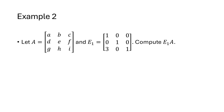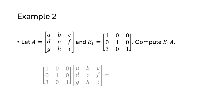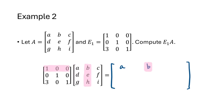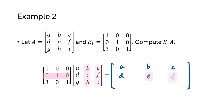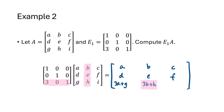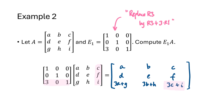Let's illustrate why multiplying an elementary matrix by a general n by n matrix gives the result of applying that row operation to that matrix. We have a generic matrix A with letters for the nine entries, and our elementary matrix E1. When we compute E1 times A using the row-column rule, the result is applying the row operation corresponding to E1 — replacing row 3 by row 3 plus 3 times row 1 — to the matrix A.